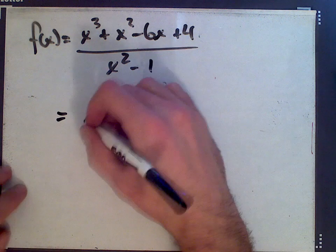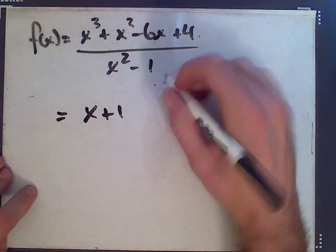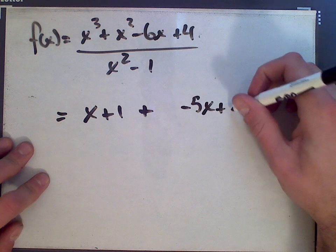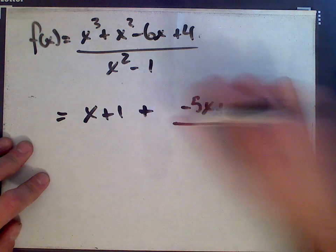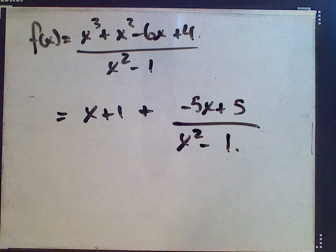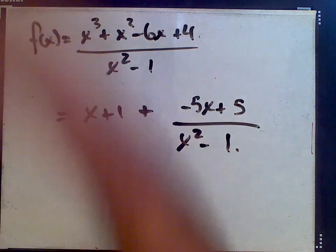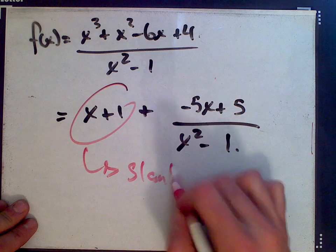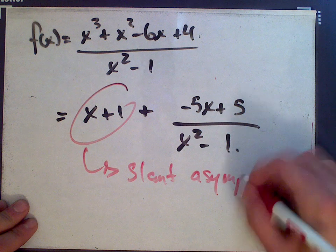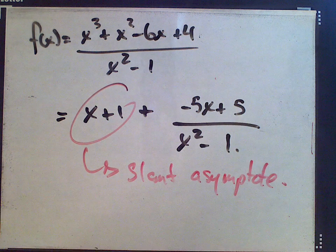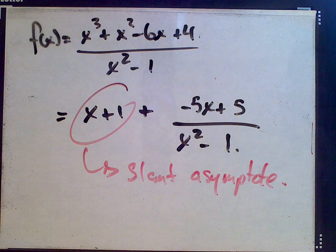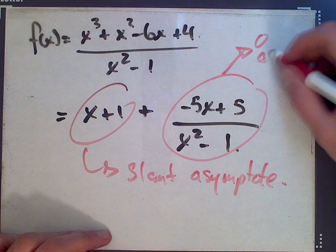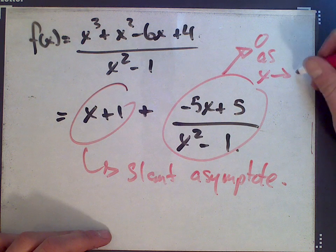And so now we can rewrite this function as the quotient which ended up being x plus 1 plus the remainder divided by x squared minus 1. And this form tells us that this is the slant asymptote: y equals x plus 1. The general idea here being that as x gets really big, this approaches 0 as x goes to plus or minus infinity.